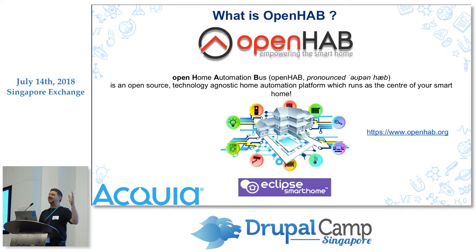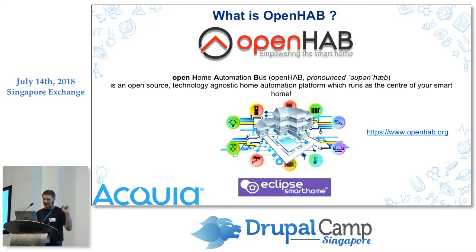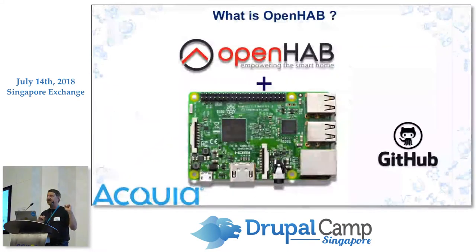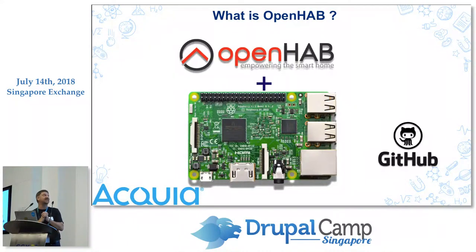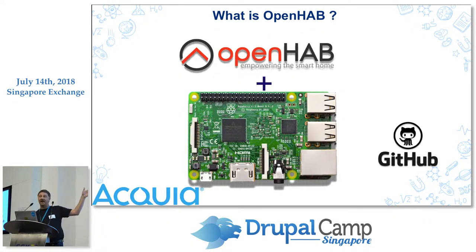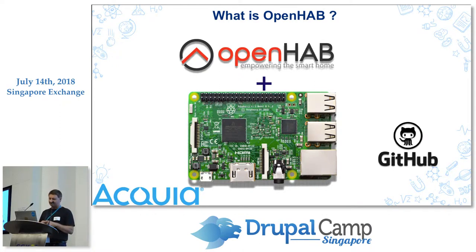Can I get a show of hands of those that have not heard of Raspberry Pi? You all familiar? Excellent. So you know that this little device can be used for a host of things. What this is used for with OpenHAB is it will run an OpenHAB server called OpenHABian. So you can install that on the Raspberry Pi and run that to be essentially your smart home centre.